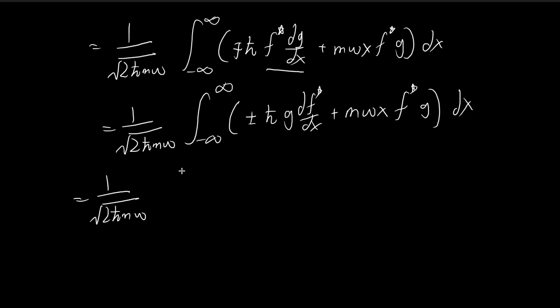And this becomes g df/dx plus m omega x f g dx. And then continuing, I'm going to pull out some terms. So I have plus minus h df/dx plus m omega x f. And I'm going to pull the g out. And because this is just a normal multiplication, it's perfectly fine to pull it out on the right-hand side.